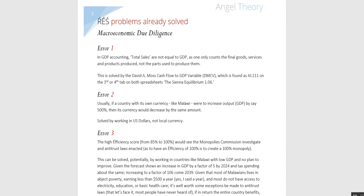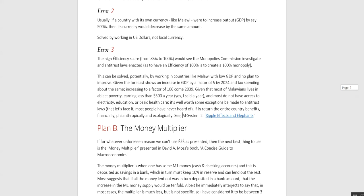Error 2. Usually if a country with its own currency, like Malawi, were to increase output GDP by say 500%, then its currency would decrease by the same amount. This is solved by working in US dollars, not local currencies.